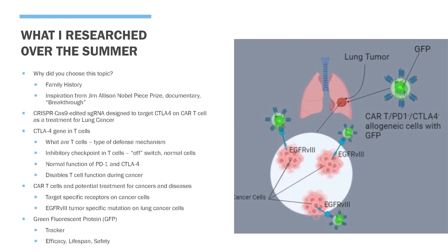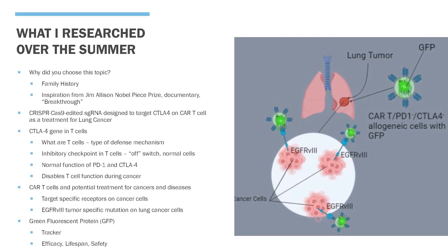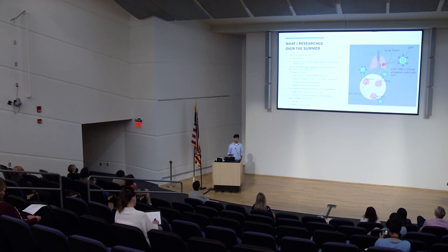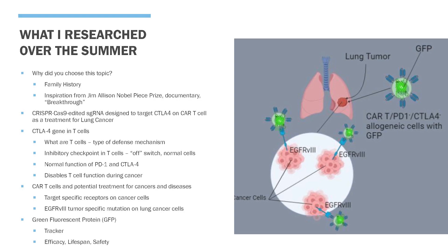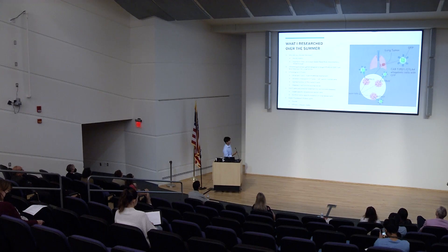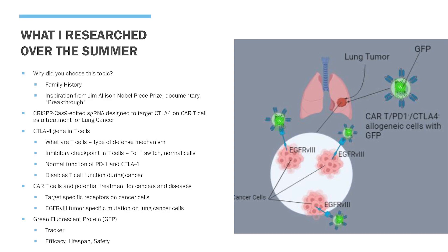What is the CTLA-4 gene? The CTLA-4 gene is an inhibitory checkpoint in T-cells. T-cells are a type of defense mechanism the immune system uses to fight off infectious diseases and cancers. They contain inhibitory checkpoints such as CTLA-4 and PD-1, which act as off-switches to prevent T-cells from killing normal cells. During cancer, the T-cell becomes exhausted, causing the inhibitory checkpoints to become co-expressed, which disables T-cell function.